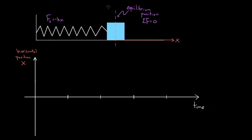And that means this equilibrium position is going to be the point where X equals zero. If I want my force to be zero, I better have X equals zero. So this equilibrium position right here — this line right here — is essentially just the X equals zero line. These two lines are representing the same thing: they represent X equals zero.